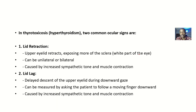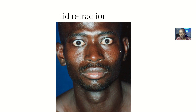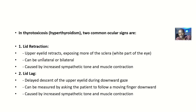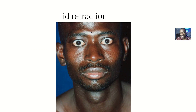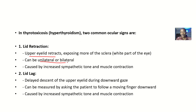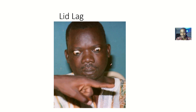For lid retraction, look at this man carefully. You can see that in lid retraction, the upper eyelids retract, exposing more of the sclera — the white part of the eye. The white part is showing much more because the eyelids have retracted back. It can be unilateral or bilateral — one eye or two eyes — and it is caused by increased sympathetic tone and muscle contraction.